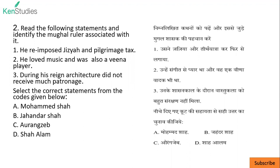Read the following statements and identify the Mughal ruler associated with it. He re-imposed jaziya and pilgrimage tax. Previously jaziya and pilgrimage tax were in place, but Akbar had removed them. Lekin, uske baad, fir se laga diya — but later, they were re-imposed.